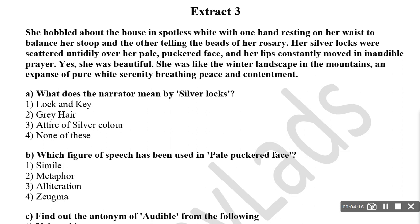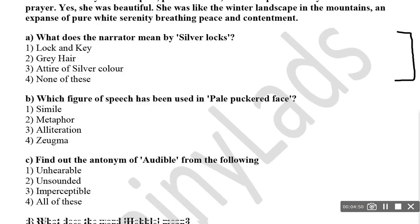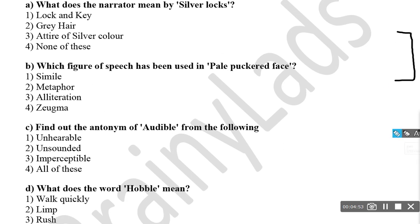Extract three: She hobbled about the house in spotless white with one hand resting on her waist to balance her stoop and the other telling the beads of her rosary. Her silver locks were scattered untidily over her pale puckered face, and her lips constantly moved in inaudible prayer. She was beautiful. She was like the winter landscape in the mountains — an expanse of pure white serenity, breathing peace and contentment. On the basis of this extract, there are 4 questions.